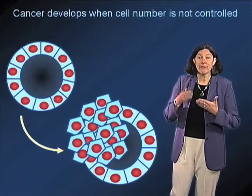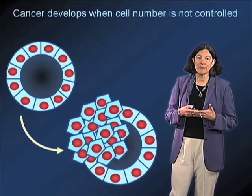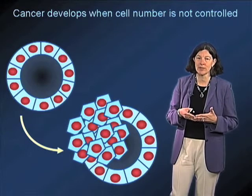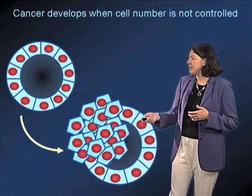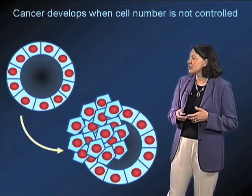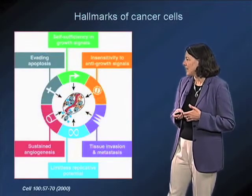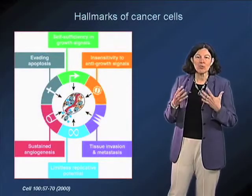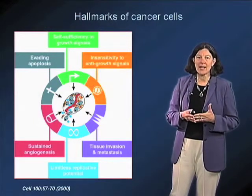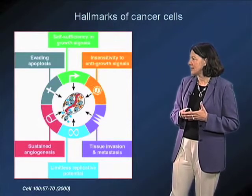The fundamental first thing that happens in the establishment of tumors is, of course, derangement in the control of cell number. As you can see in this diagram, cells begin to grow out of control, and that then disturbs the architecture. This loss of growth control can happen at a number of different levels, illustrated schematically here.